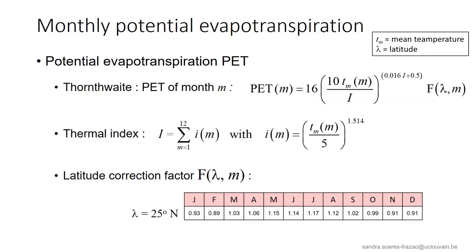Some common formulas are proposed here to determine the potential evapotranspiration for each month of the year, as a function of the mean temperature Tm of the considered month and of the latitude lambda of the location. So, an example of the latitude correction factor is given here for a latitude of 25 degrees north, which is in fact the approximate latitude of Haiti that served in many of our examples.